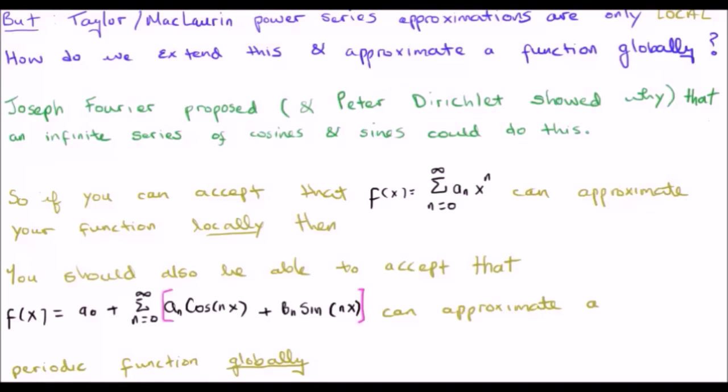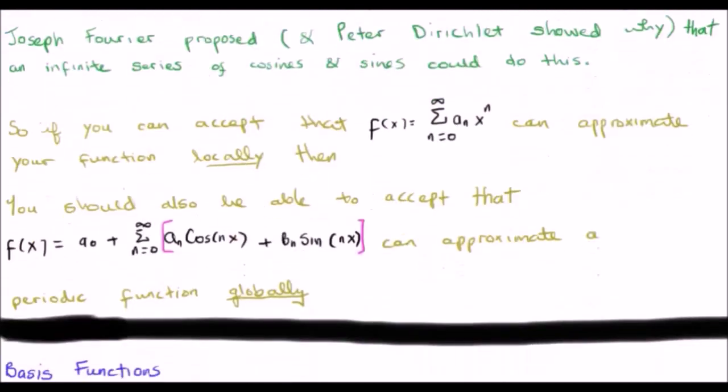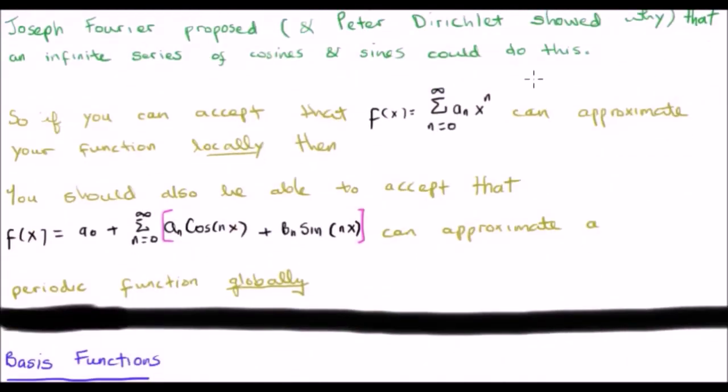So it's something similar to a power series. My point here is that if you can accept that a power series can approximate your function locally, then you should have no particular problem in accepting that this Fourier series can approximate your function globally.